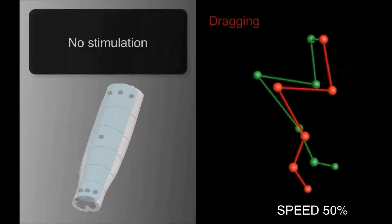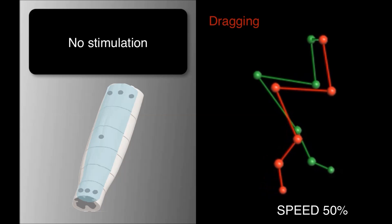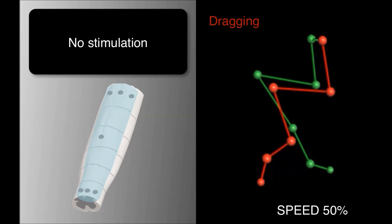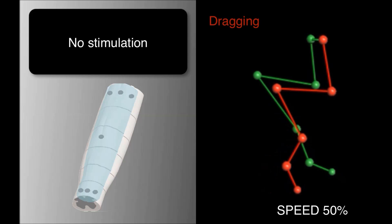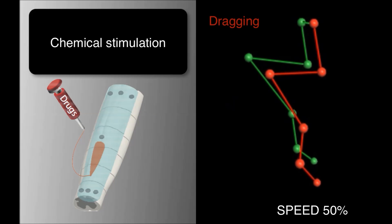Without any stimulation, the rats were completely paralyzed. A serotonergic replacement therapy delivered through the chemotrode did not promote movement.